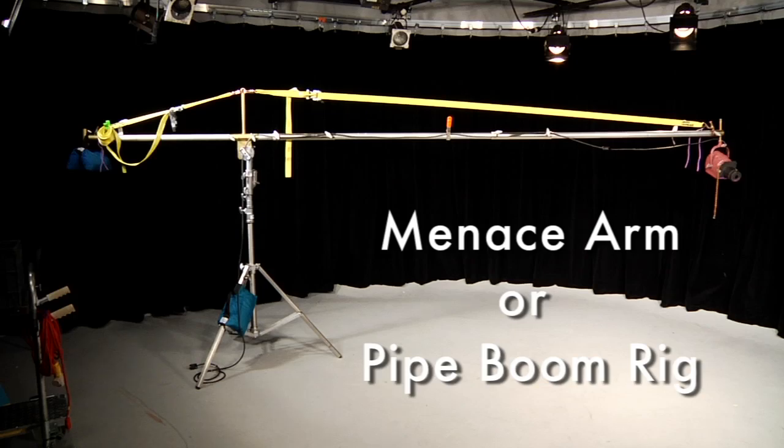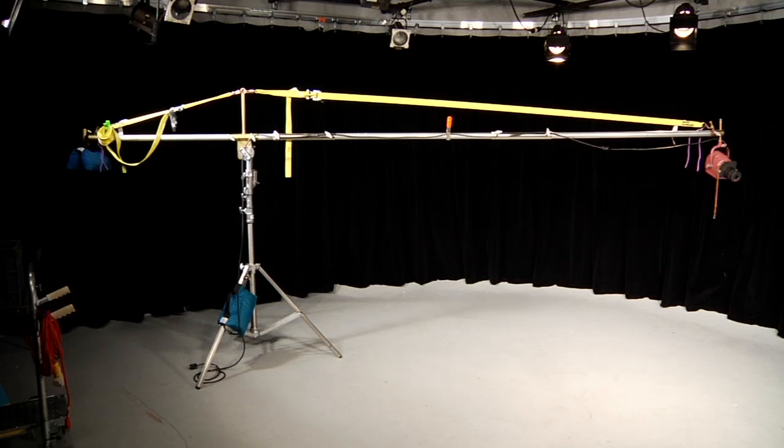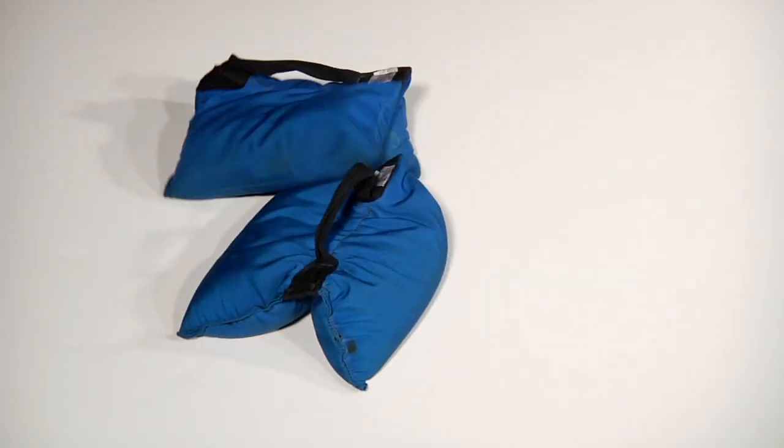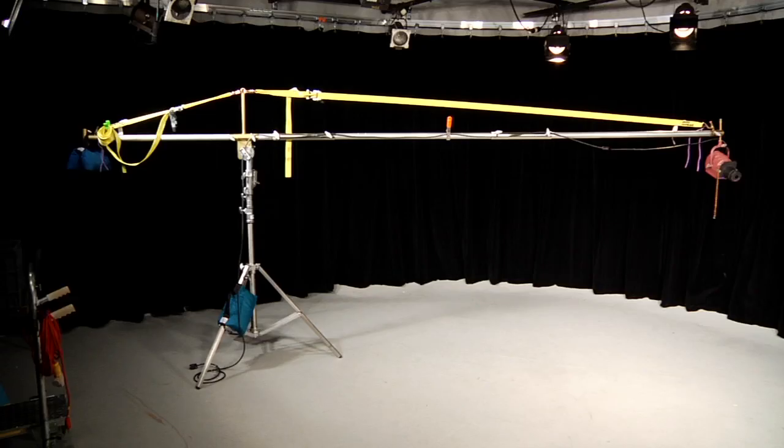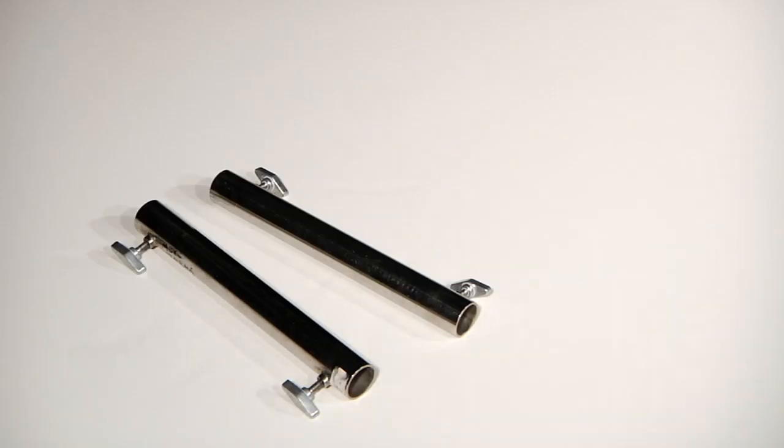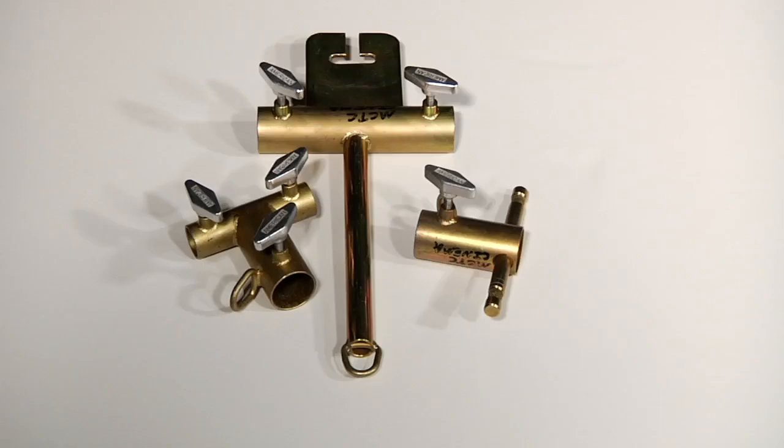Today we're going to build a menace arm or pipe boom rig. To start off with we need a combo stand, sandbags, pipe - in this case we have one and a quarter inch pipe in five foot lengths to create our boom. We have pipe joiners to bring the sections together and we have the menace arm or pipe boom kit.